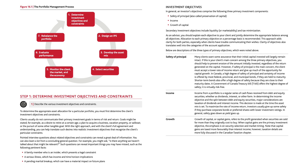In general, an investor's objectives comprise three primary investment components: safety of principle (also called preservation of capital), income, and growth of capital. Secondary investment objectives include liquidity or marketability and tax minimization. As an advisor, you should explain each objective to your client and jointly determine the appropriate balance among all objectives. Allocation to each primary objective on a percentage basis is recommended. This approach adds clarity for both parties, especially when clients have trouble communicating their wishes.